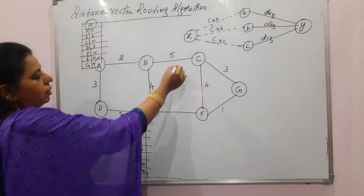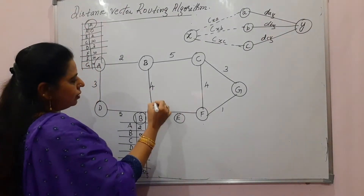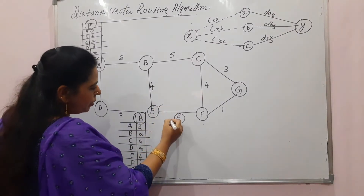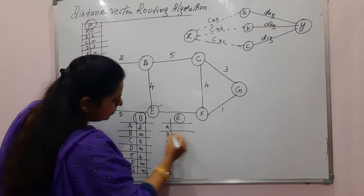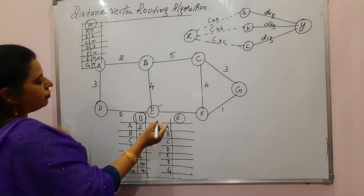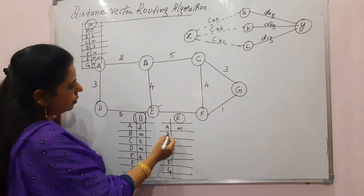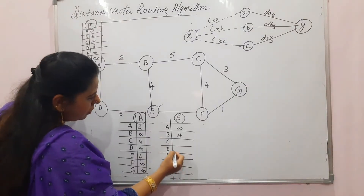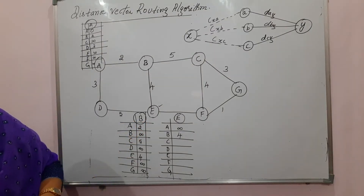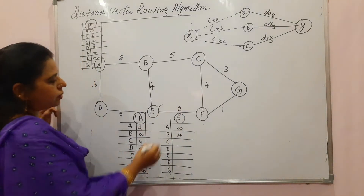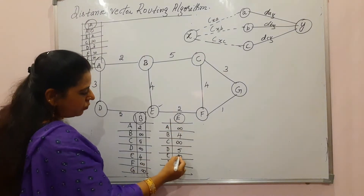Let us take the initial distance vector for node E. E cannot reach A (indirect, infinity). E can reach B at a cost of 4. E can reach F at a cost of 2. E can reach D at a cost of 5. The rest are infinity. Now B is receiving from E this initial distance vector.